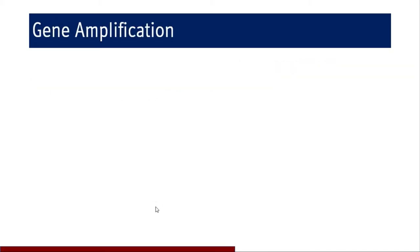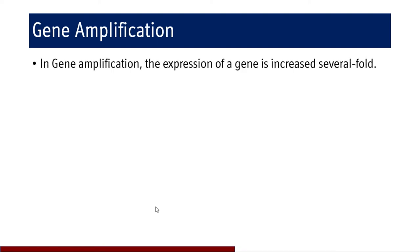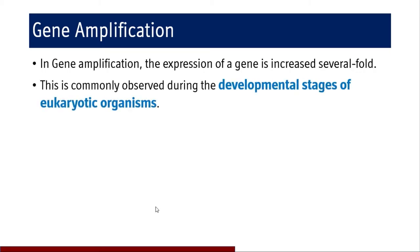Coming to gene amplification: as the name suggests, the expression of a gene is increased several fold. This is commonly observed during the developmental stages of eukaryotic organisms, when more protein is required for growth. The transcription and expression of a particular gene coding for a protein required at a particular step in the growth process will be amplified so that more and more quantity of that protein is synthesized.